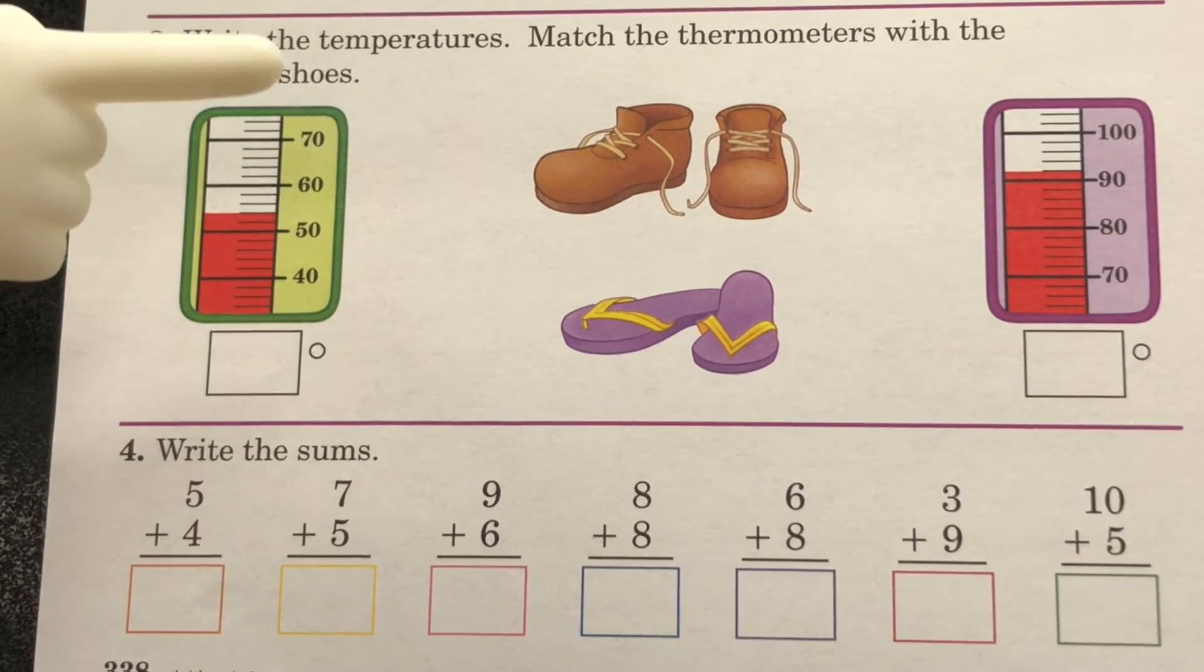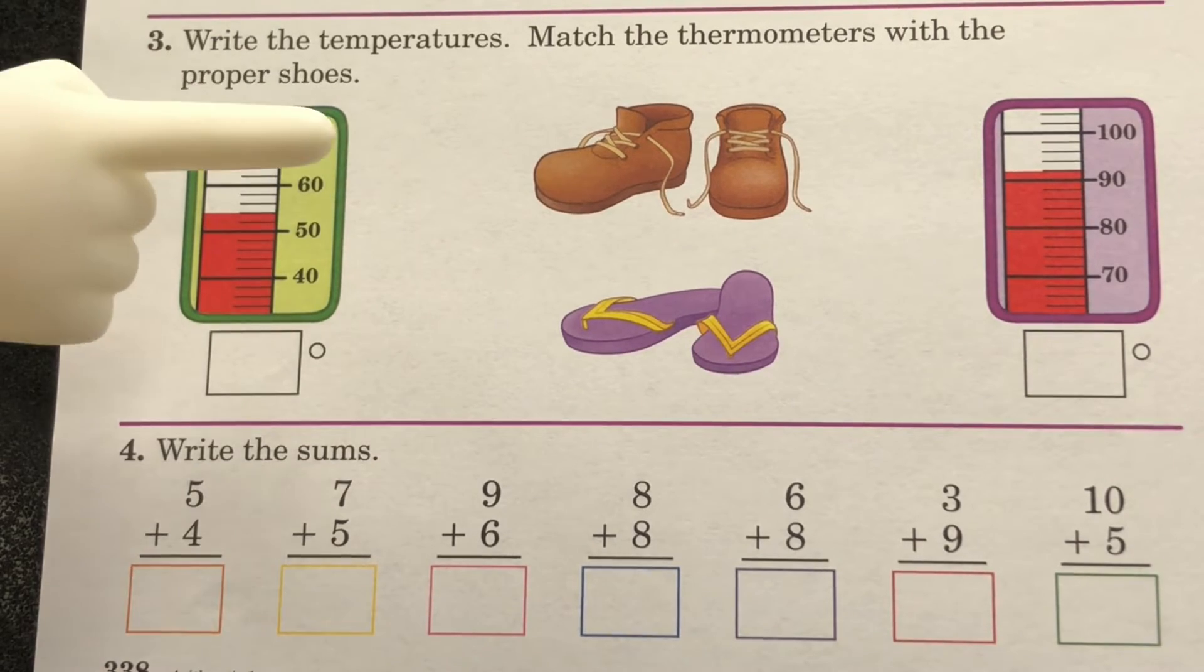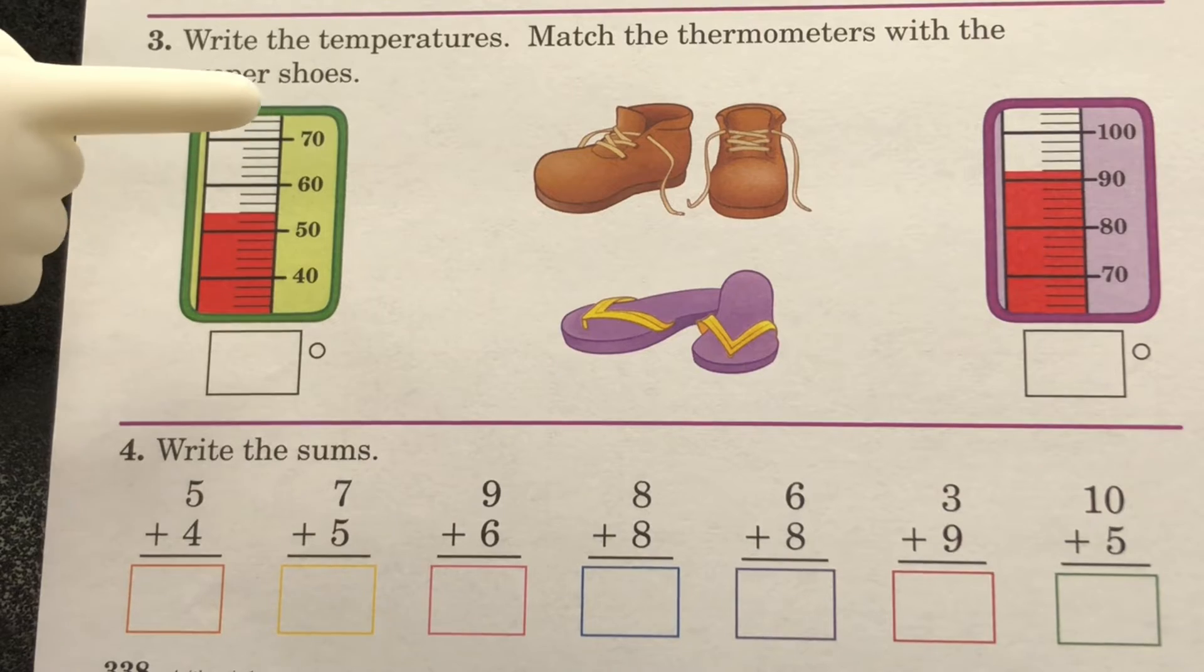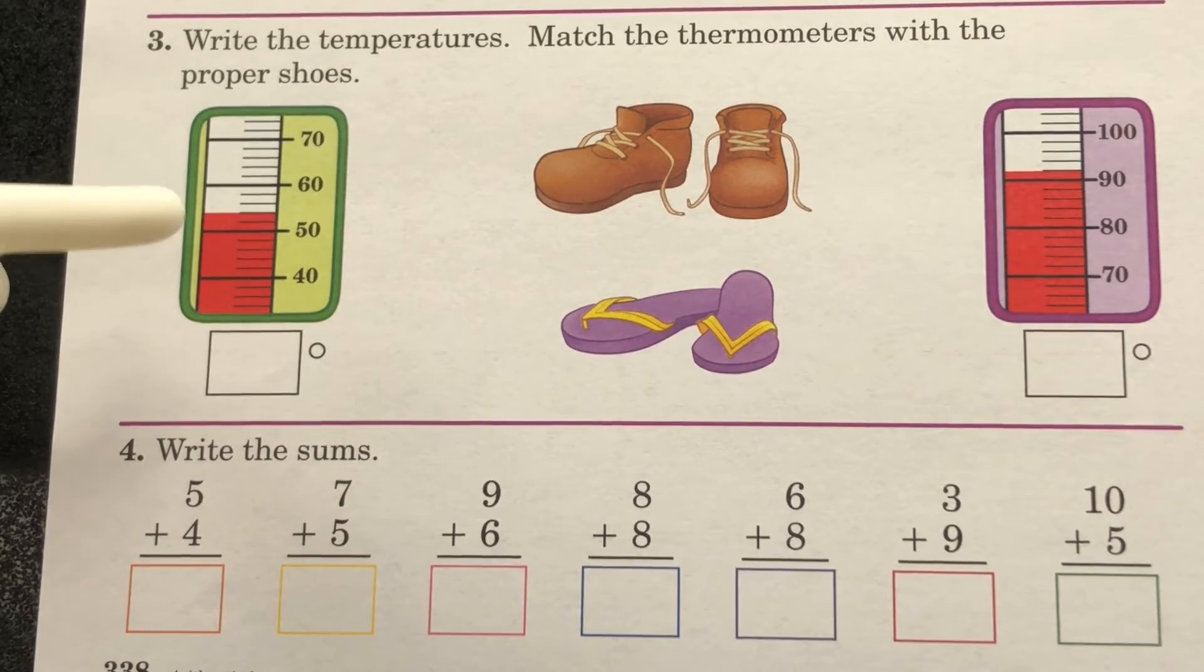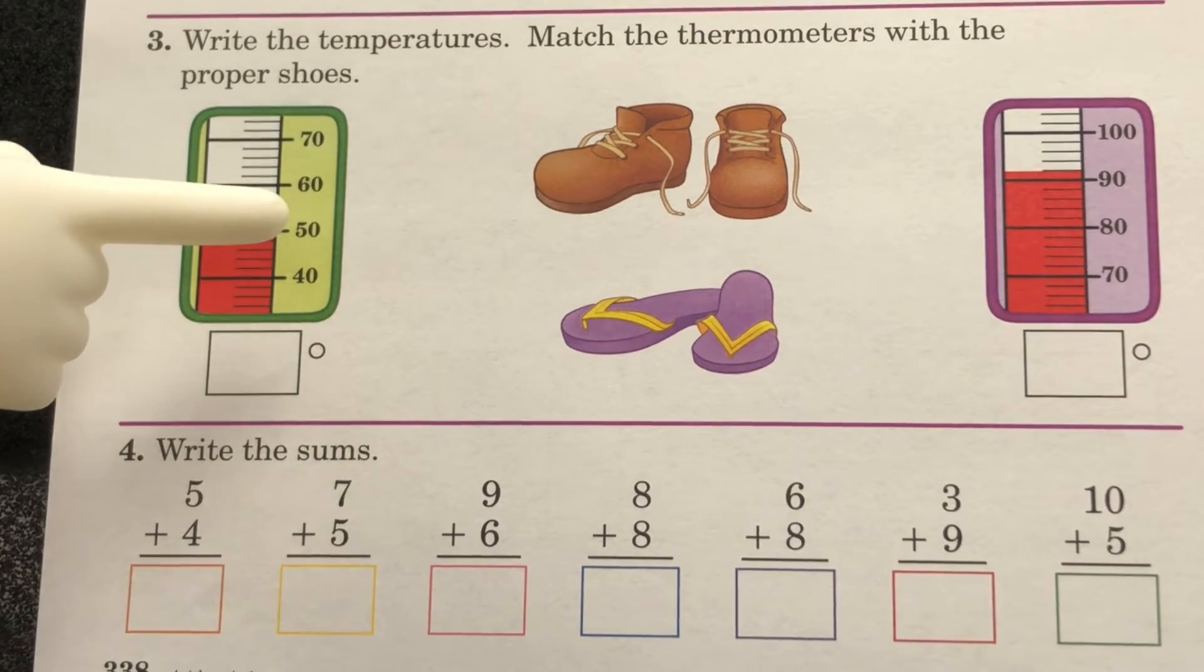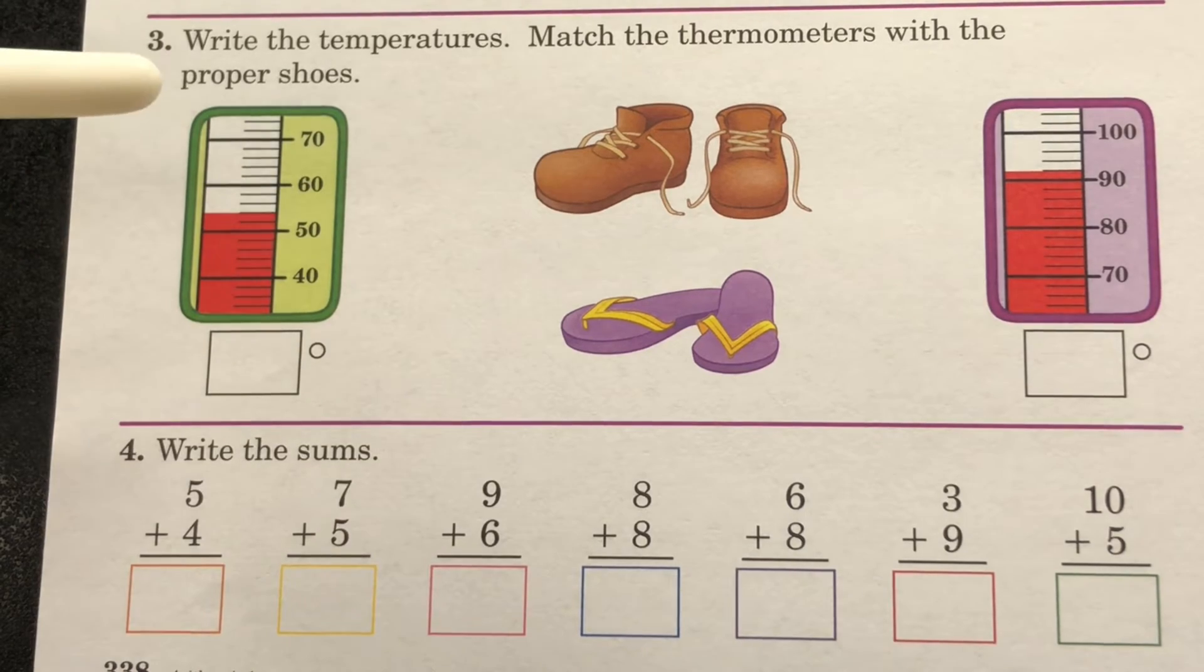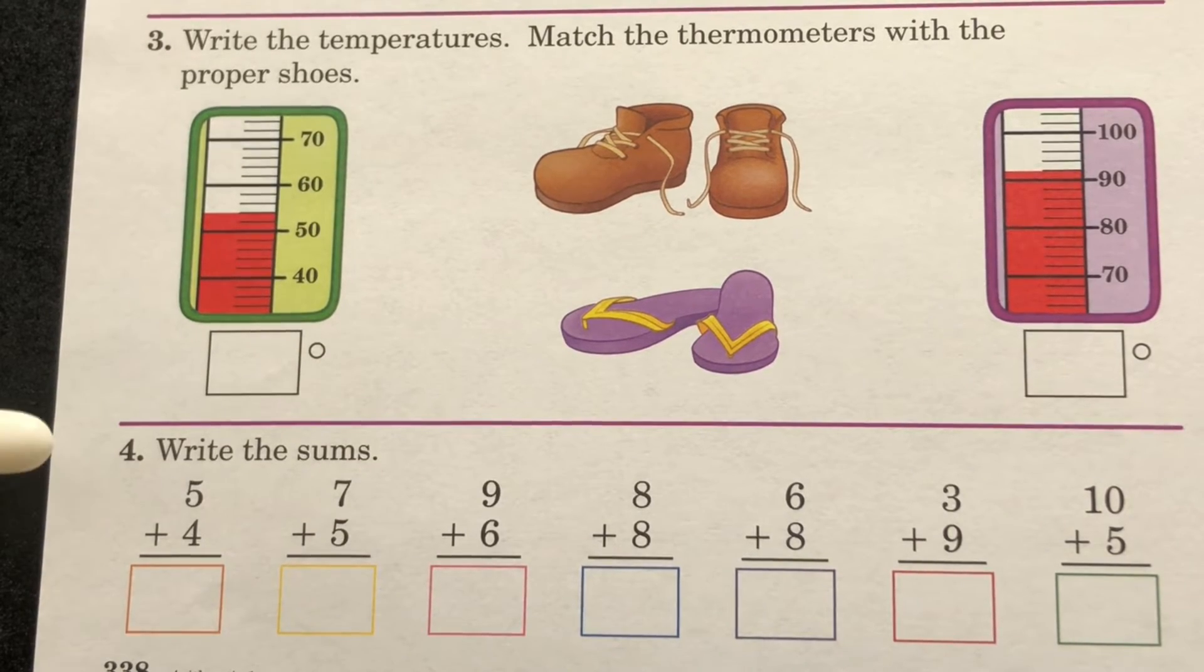Take a look at section 3. Write the temperatures. Match the thermometers with the proper shoes. Look carefully at the thermometers and record the temperature. Then match the thermometers with the proper shoes. Take a look at section 4. Write the sums. Complete section 4.